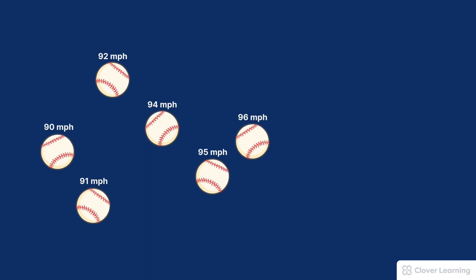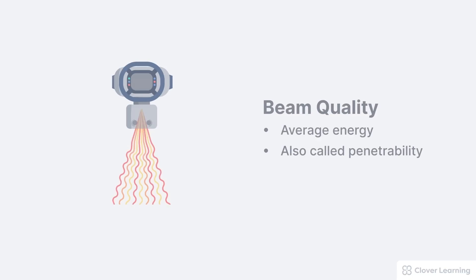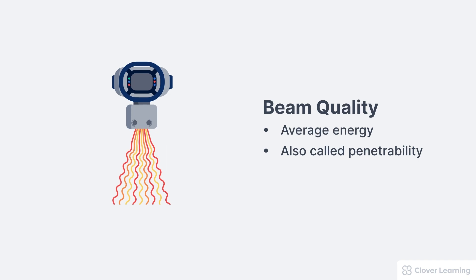The same general principle is true of an x-ray beam. In this illustration of the x-ray beam, the different energies are represented by different colors. The low energy photons are yellow, medium energy is orange, and the high energy photons are represented as red. The beam quality represents the average energy of all of those photons together. Sometimes this is also called the beam penetrability, since the ability of the beam to penetrate matter is directly connected to its energy.